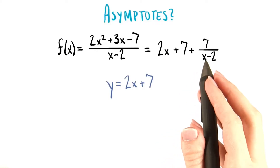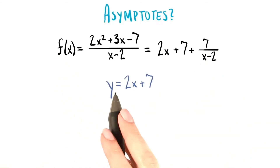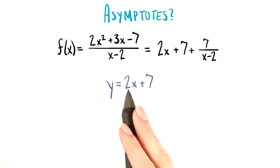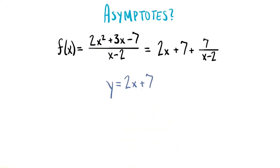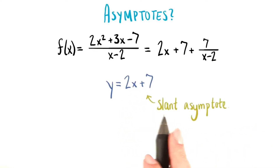So as x gets bigger and bigger, our function is going to approach the line y equals 2x plus 7. This is called a slant asymptote.